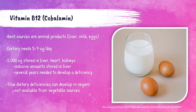Vitamin B12 is also called cobalamin. It's present in animal products like liver, milk, and eggs, and is essential for red blood cell formation, DNA, and proper neurological functioning. We need around 5 to 7 micrograms of vitamin B12 per day. The liver, heart, and kidneys store around 5,000 micrograms, primarily in the liver. Because so much is stored and only a small amount is used daily, it actually takes several years of not eating B12 for a deficiency to develop. Since B12 is not found in vegetable sources, vegans have a high risk of developing this deficiency.